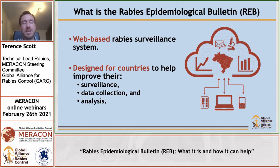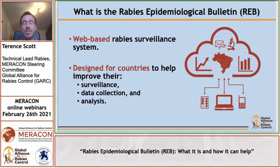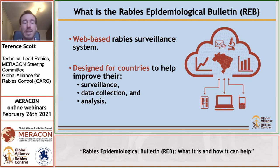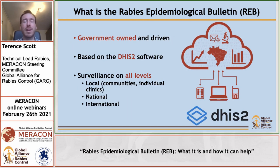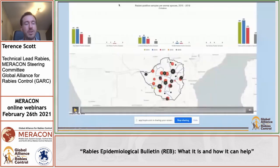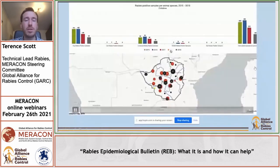The system automatically generates graphs, maps, pivot tables, and other analyses, precluding the need for GIS experts to analyze your data. It helps to track vaccinations, rabies cases, and human bite cases, among many other aspects of rabies surveillance. There is a short clip here showing an example dashboard of the system, demonstrating how all the outputs are interactive.